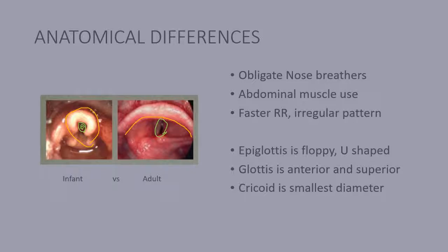In infants, the glottis — or that glottic area where the vocal cords are — is anterior and superior, so it's further towards the front and higher up, closer to the base of the tongue. This makes it very easy to be obstructed by the tongue or a foreign body. In the infant airway, the cricoid ring below the level of the cords is the smallest diameter, meaning that an object could get through the cords and get stuck in the trachea, completely obstructing airflow.